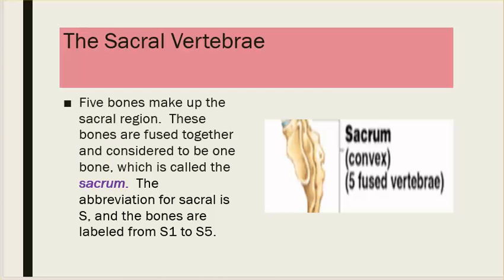The sacral vertebrae: five bones make up the sacral region. These bones are fused together and considered to be one bone, which is called the sacrum. The abbreviation for sacral is S, and the bones are labeled from S1 to S5.